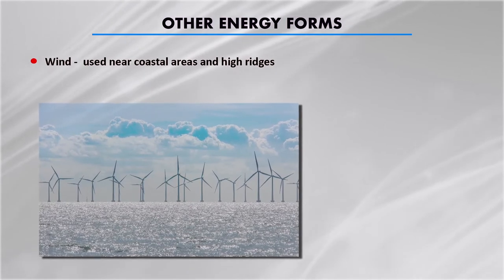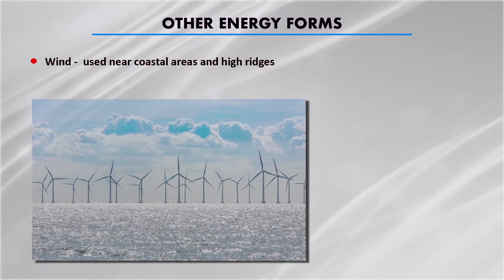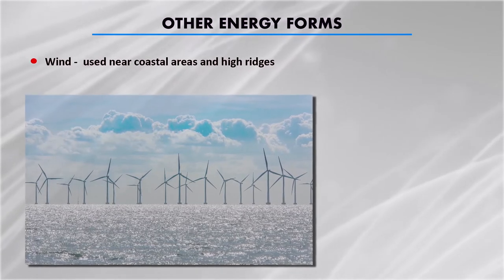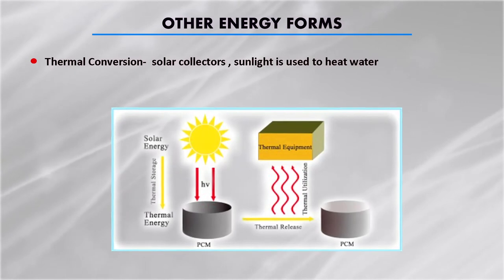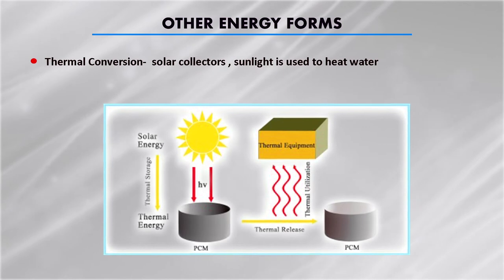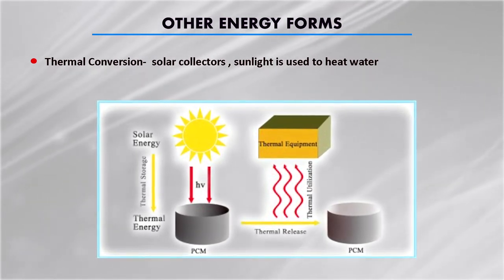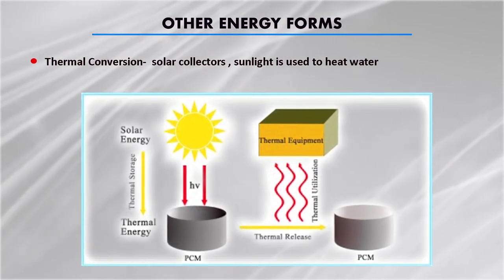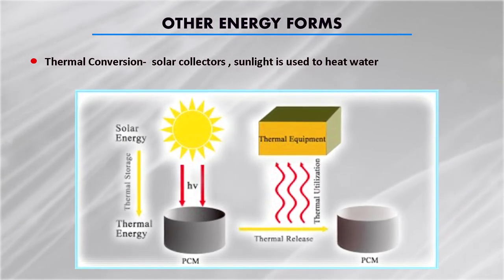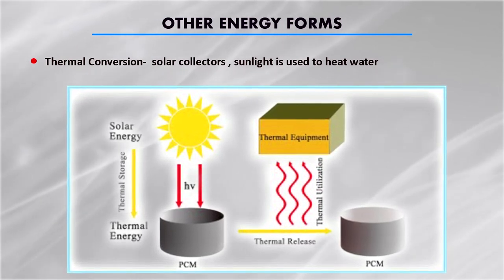Wind energy is used near coastal areas and places with high wind possibilities where wind plants can be set up. We have seen wind turbines — this is a renewable energy source that can produce electrical power. Thermal conversion is also possible: using a solar collector, heat energy received from the sun is collected and converted into electrical energy. Sunlight is used to heat water, steam is produced, the steam runs a turbine, and then the mechanical energy is converted into electrical energy by a generator.